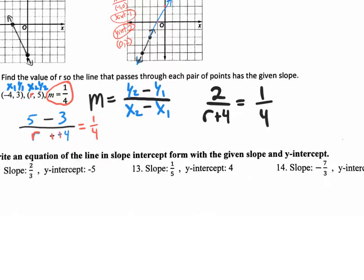What do we have here? We have a proportion — one fraction equaling another fraction. So what do we do when we have one fraction equaling another fraction? Cross multiply! We're going to cross multiply.